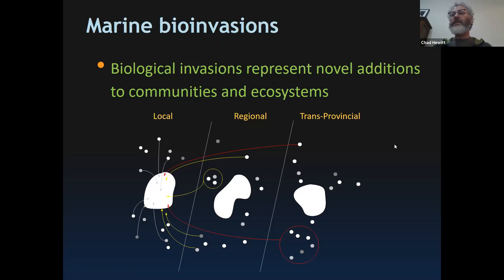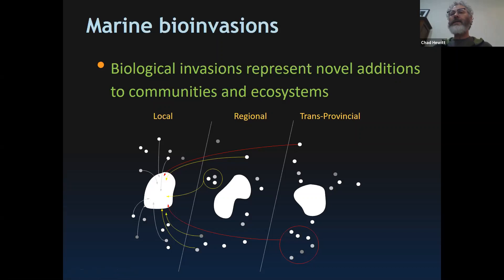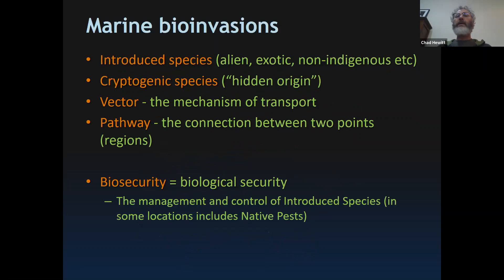Biological invasions represent novel additions to communities and ecosystems in that they can exchange species both locally, regionally, but even more importantly, between disparate locations that would never naturally see the exchange of materials — such as Europe to Australia or Australia to North America in the Atlantic. These occur on spatial scales of tens of thousands of kilometers but during windows of time equivalent to local processes. More importantly, they can transfer not just individual species but entire communities, including intact predator-prey and competitive relationships.